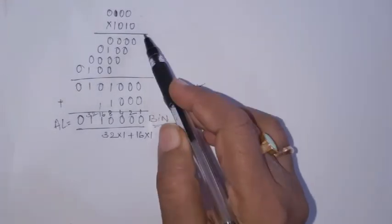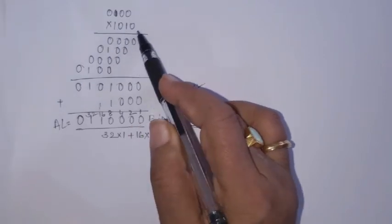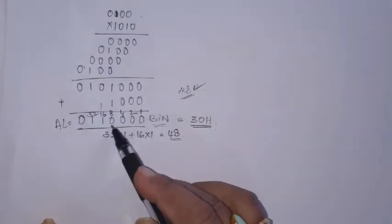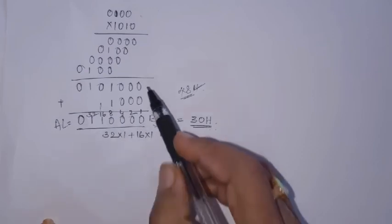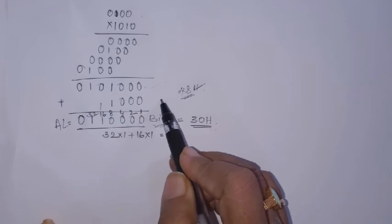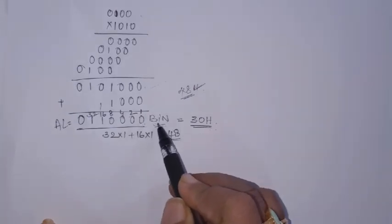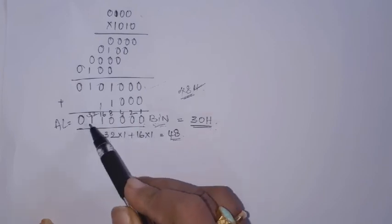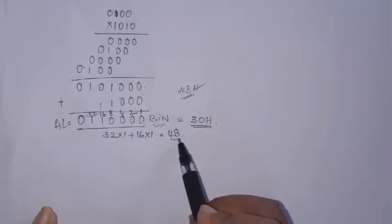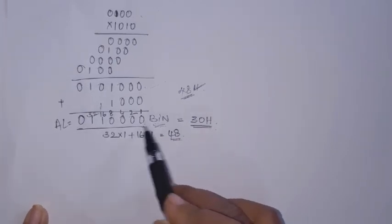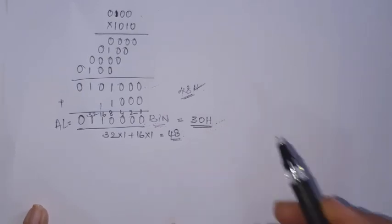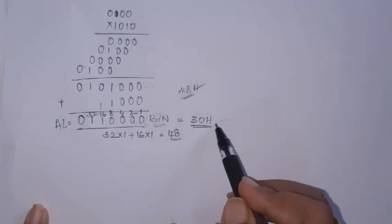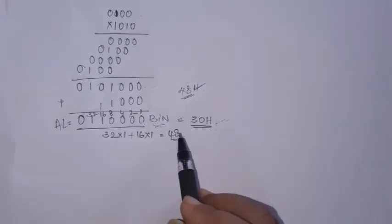For clarification: multiplying 4 by A (which is 10 in binary, i.e., 1010) gives the intermediate result, and then adding 8 gives the final binary equivalent of 48. You can verify: 110000 in binary is 32 + 16 = 48, which equals 30H in hexadecimal. This is how BCD to binary conversion is done and the binary equivalent is obtained in register AL.